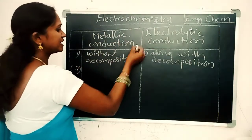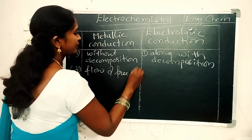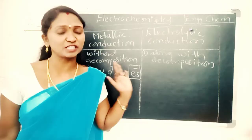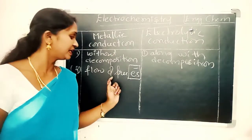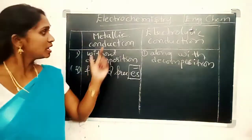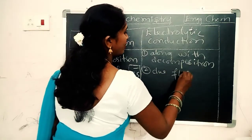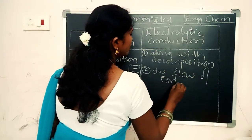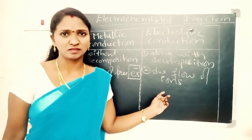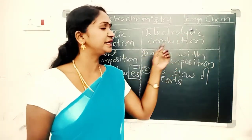Second difference: metallic conduction is due to the flow of free electrons. But electrolytic conduction is due to the flow of ions. These ions may be cations or anions.